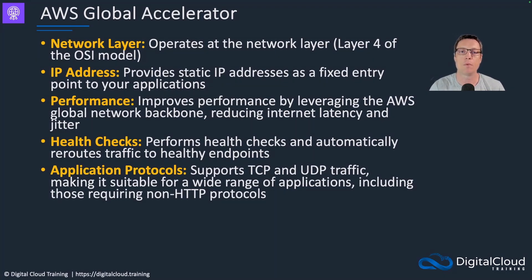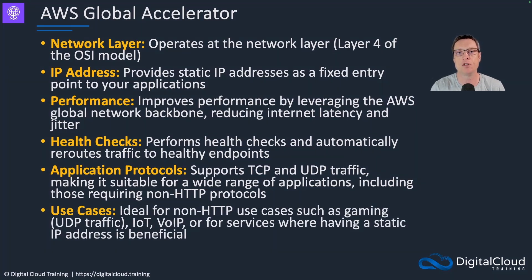Global Accelerator supports TCP and UDP traffic, so you can use it for a wide variety of applications. With CloudFront, you're only able to utilize HTTP and HTTPS — you cannot run traffic through CloudFront if it's using some custom TCP or UDP port. That's where Global Accelerator comes in. For HTTP and HTTPS traffic on port 80 or port 443, utilize Amazon CloudFront. For anything else, you can utilize AWS Global Accelerator across any TCP or UDP port.